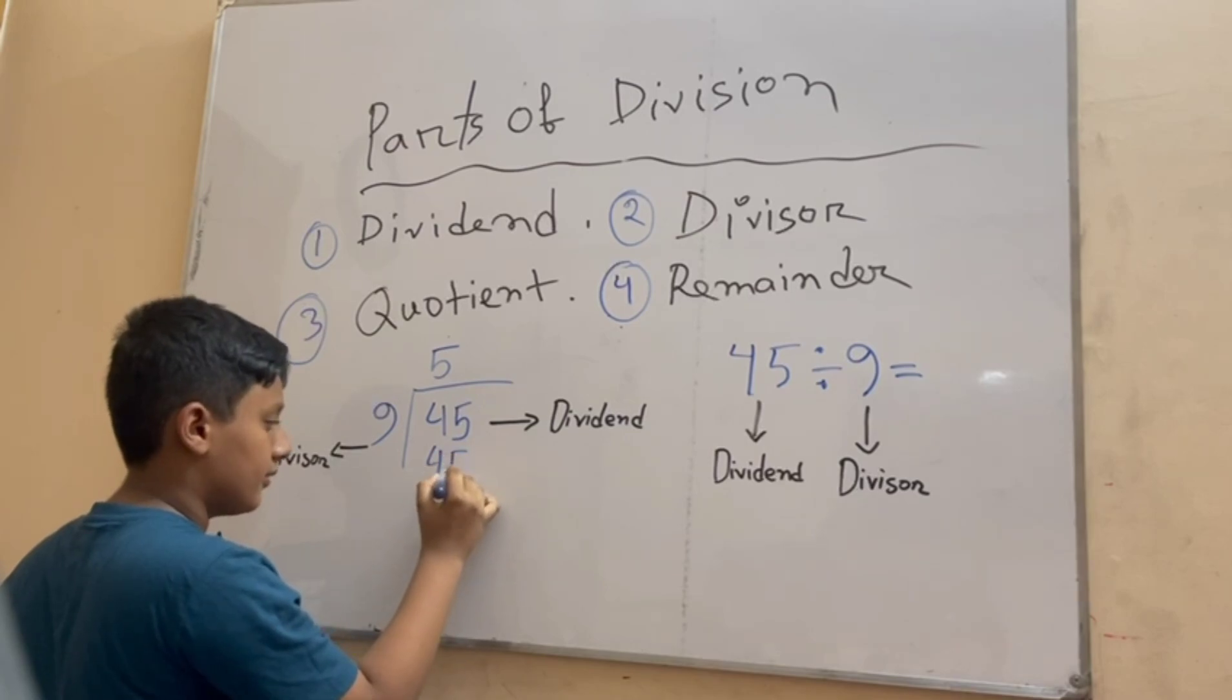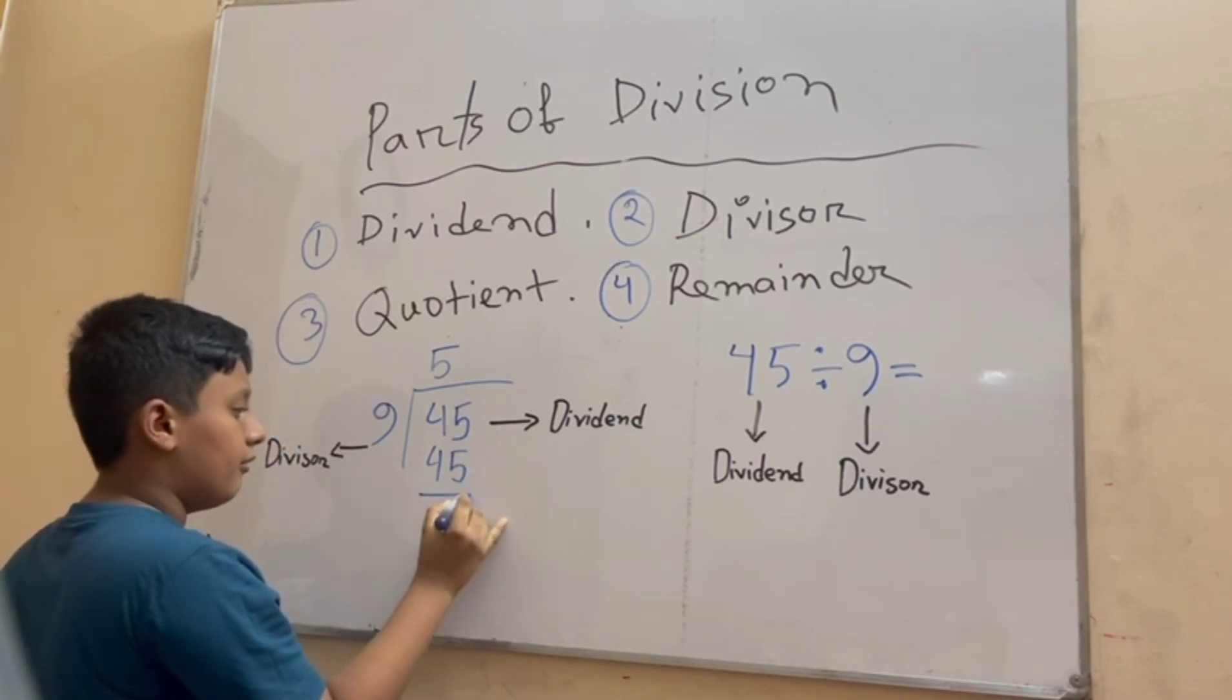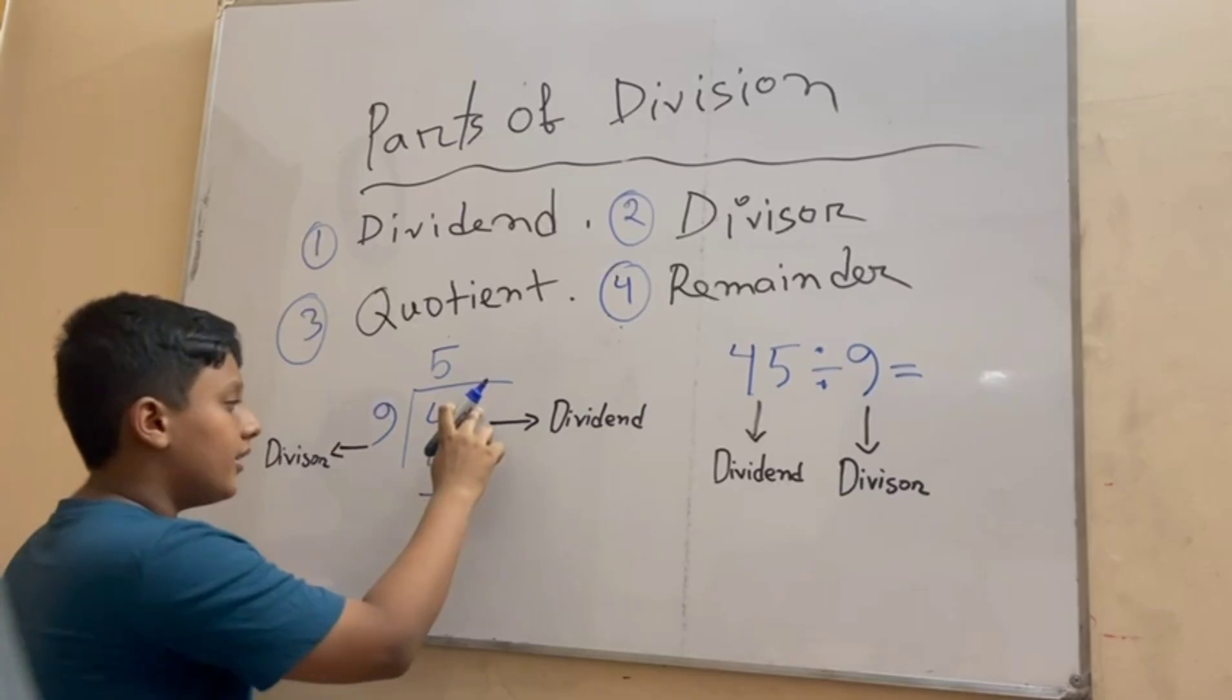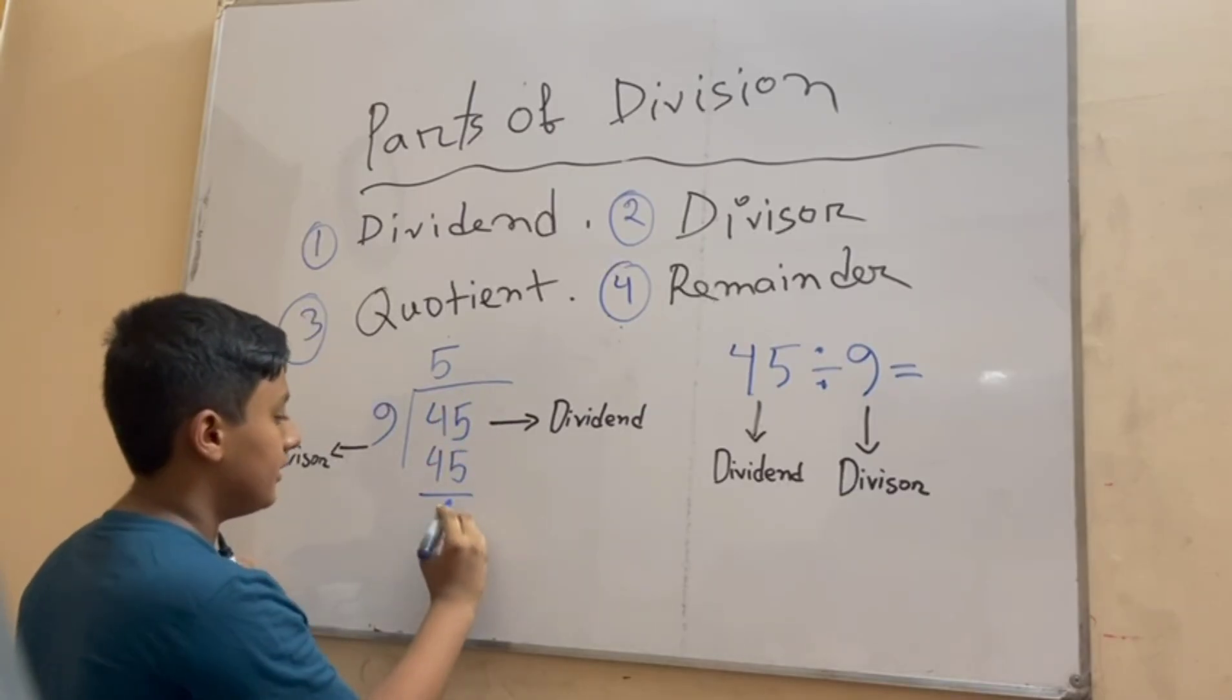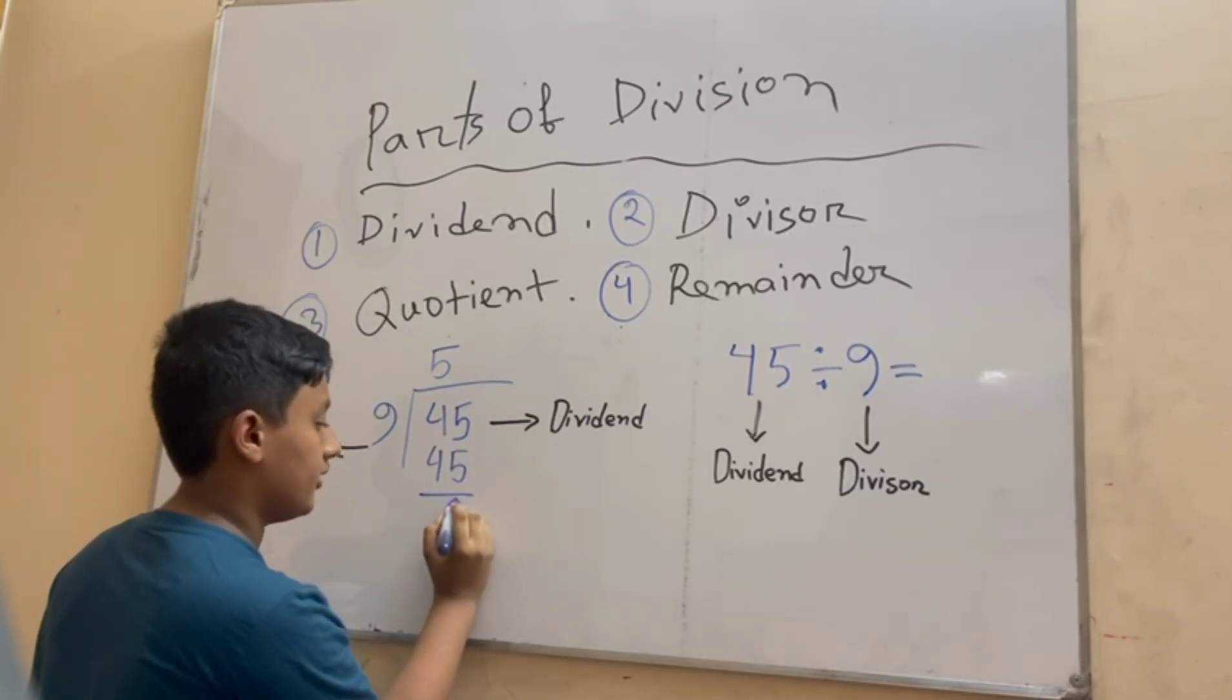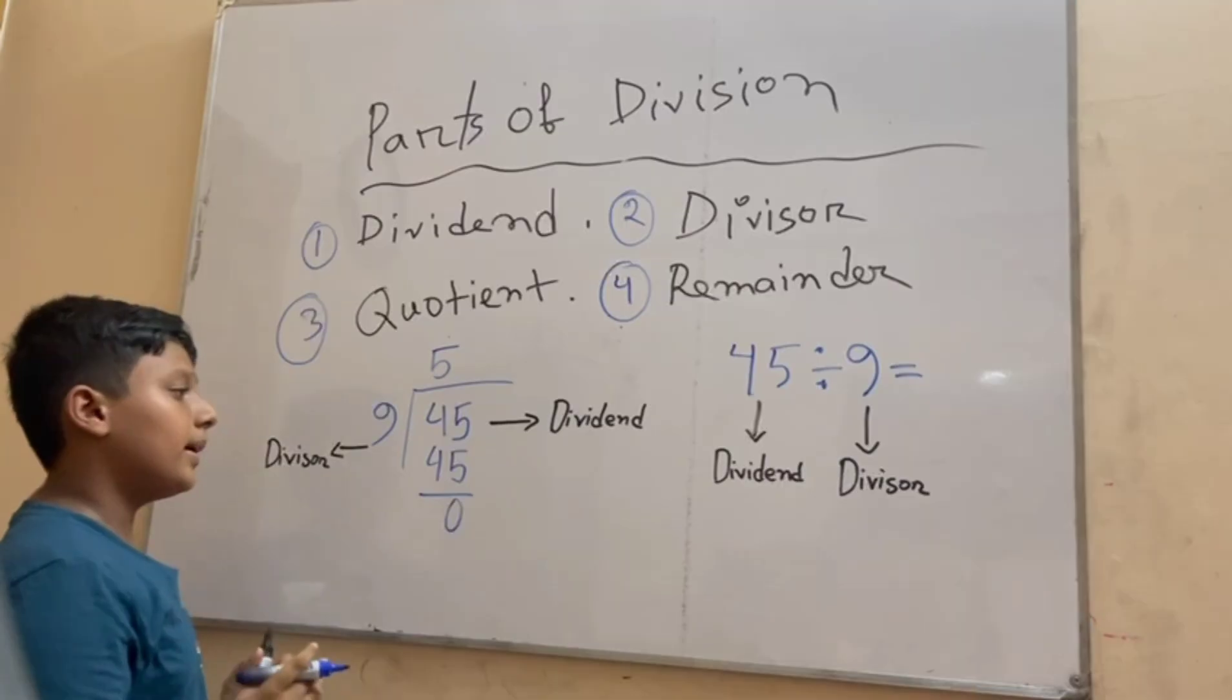And now we have to do the subtraction. 45 minus 45 leaves no remainder, it is 0. The remainder is 0.